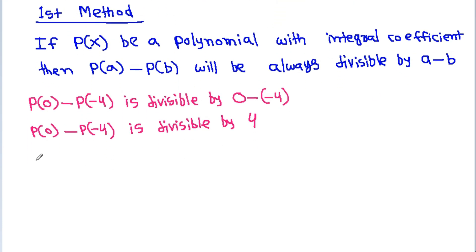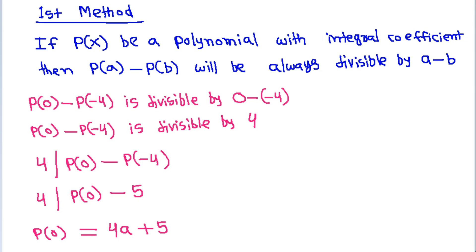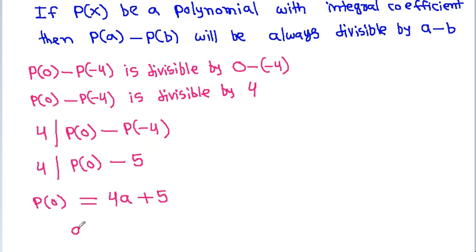So, 4 divides P(0) minus P(-4), and P(-4) is 5. So, P(0) will be equal to 4A plus 5, where A is any integer.